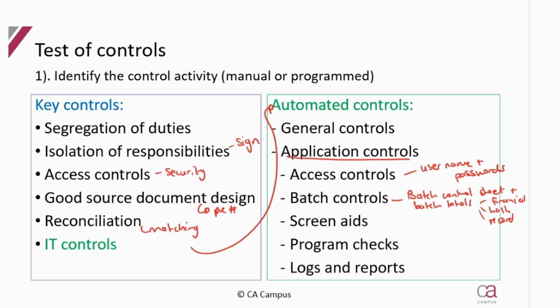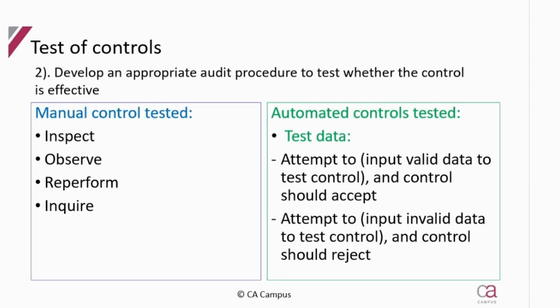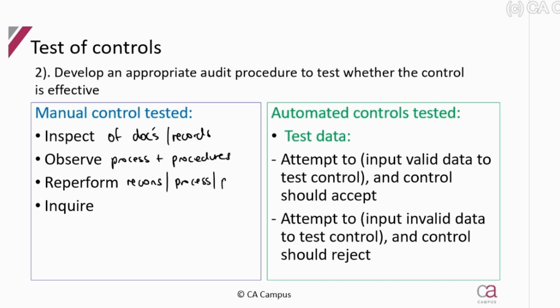You must see the control in the question before you can test it. Once identified, develop a procedure. To test manual controls, use: inspection of documents and records; observation of processes and procedures; re-performance of reconciliations and processes; and inquiry only as a very last resort. You would generally not include inquiry in your procedures, but if you cannot think of anything else, you may inquire about the control.